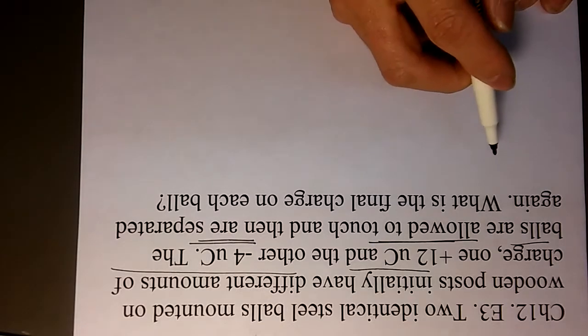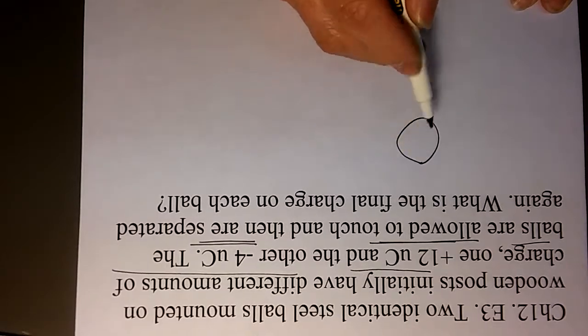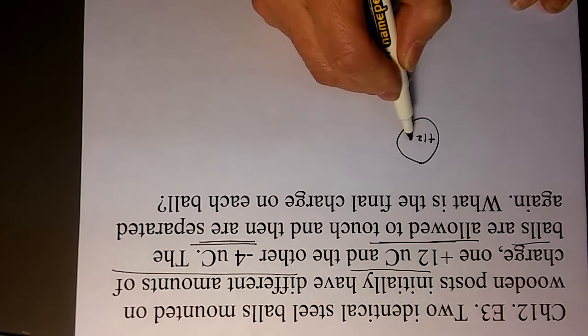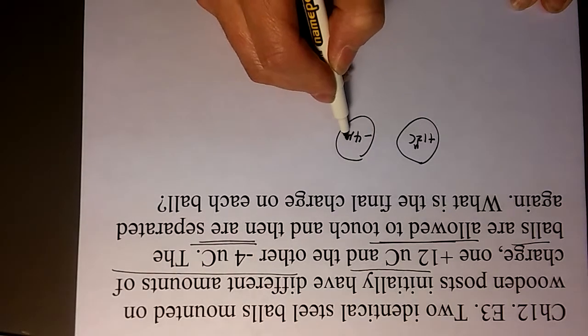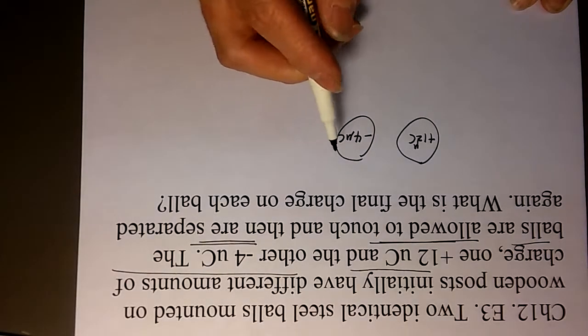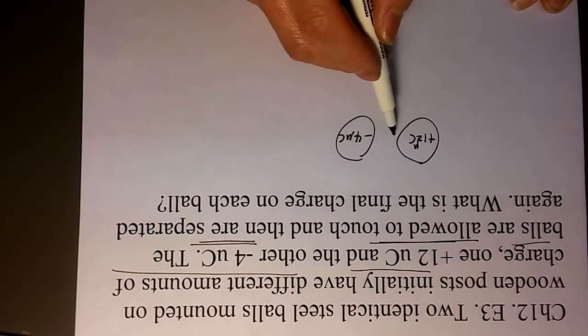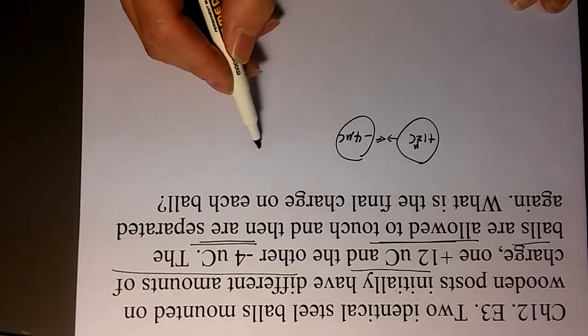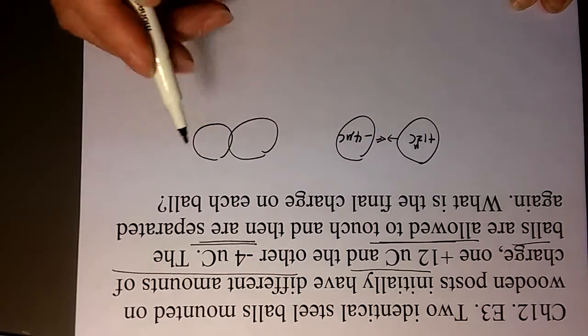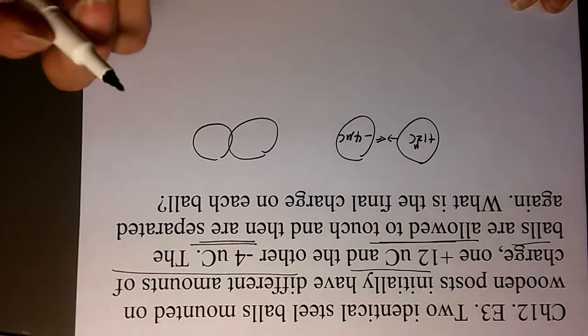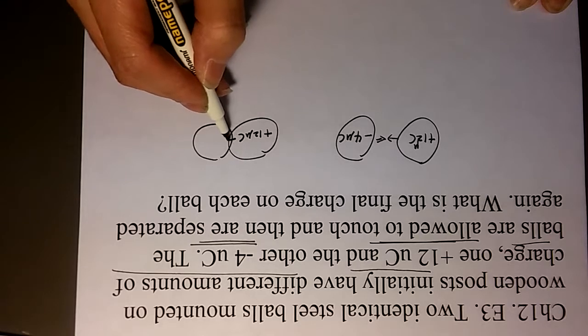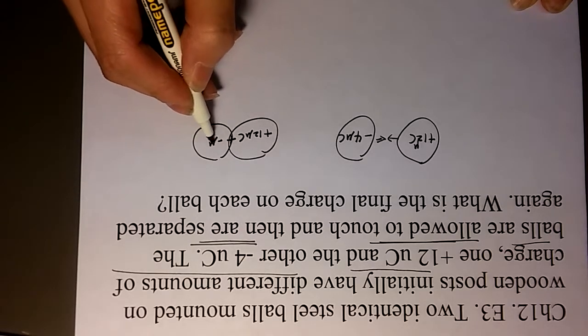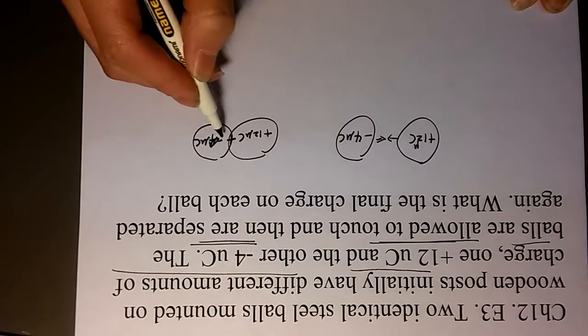So this should be same as the previous one. So first, positive 12 microcoulomb and negative 4 microcoulomb. And then after touch, they become altogether positive 12 microcoulomb plus negative 4 microcoulomb, right?